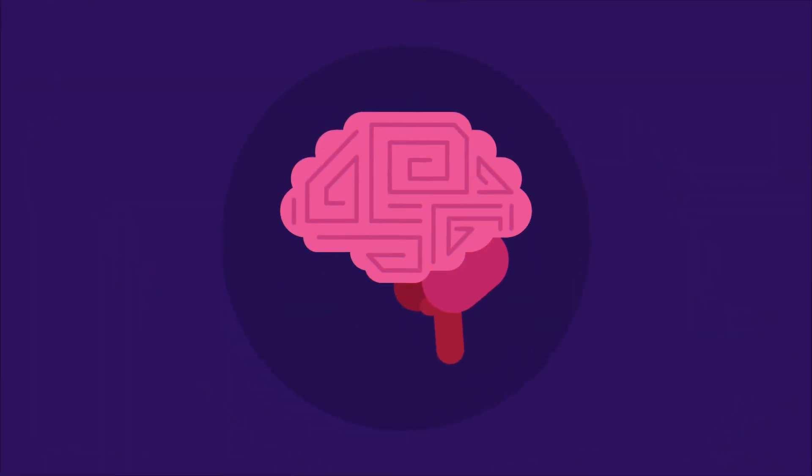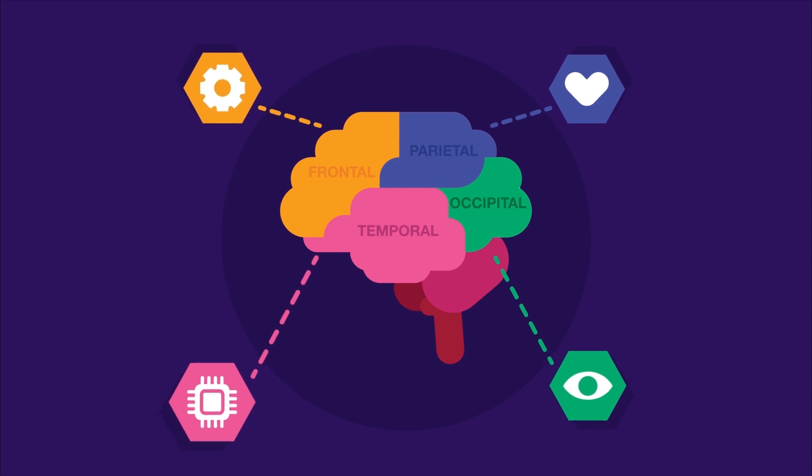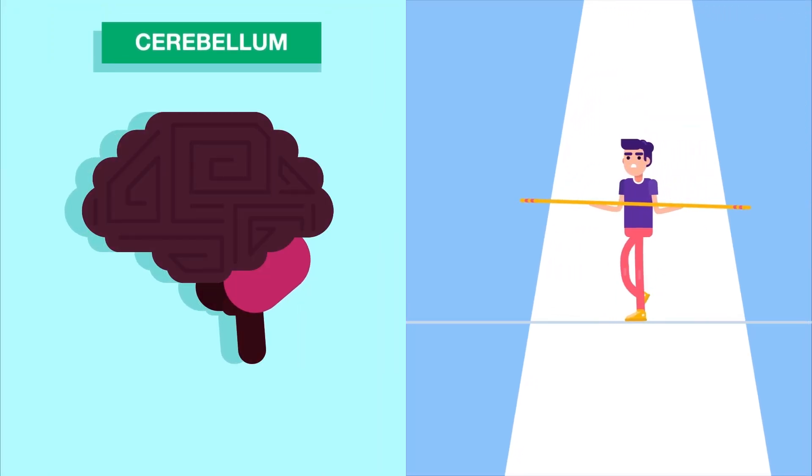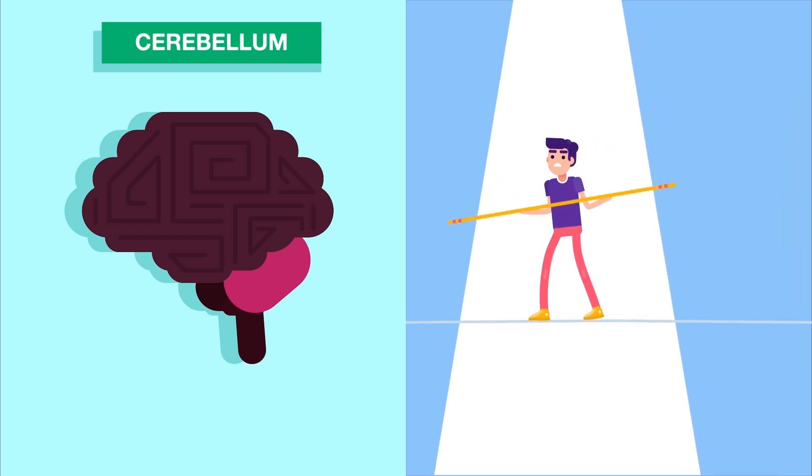Each cerebral hemisphere has four lobes, namely frontal lobe, parietal lobe, occipital lobe and temporal lobe. Each lobe performs different functions. Cerebrum is responsible for movement and coordination. It gives you sense of balance and thus prevents you from falling down.